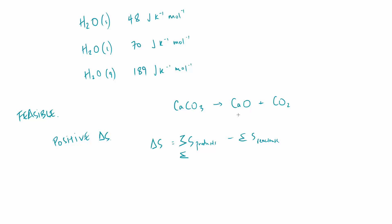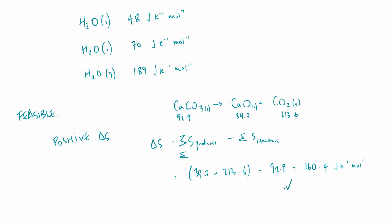The values — which would be given in an exam — are: calcium oxide 39.7, carbon dioxide 213.6, and calcium carbonate 92.9 J/K/mol. Solids have much lower values and gases much higher, as expected. Calculating the entropy change: products give 39.7 + 213.6, minus 92.9, giving an overall entropy change of 160.4 joules per Kelvin per mole. Therefore this reaction is feasible. This calculation is worth two or three marks and is really easy — just remember delta S equals sum of products minus sum of reactants.